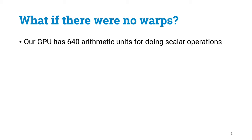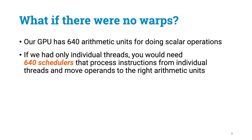Consider a hypothetical GPU that didn't have anything like warps or blocks. You would just create millions of threads, and they would execute completely independently of each other. Now remember that the GPU we use as a running example here has got 640 arithmetic units for doing scalar operations. And to keep all of them busy, you will need to feed some work to each of them in every clock cycle. So if all threads were independent, the hardware would need to have 640 parallel circuits that find threads that are ready for execution, process instructions, and move the right operands of each instruction to the right arithmetic unit. Maybe this could be done, but we would waste a lot of space for all these circuits and lots of power as well. Most of the GPU would be circuits for control logic instead of circuits that do useful work.